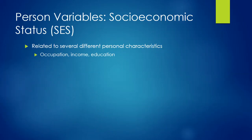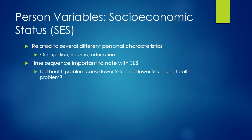SES is another variable of interest, related to occupation, income, and education — all of which are related to disease risk. It's important to consider the time sequence, since lower SES could cause a health problem or a health problem could cause lower SES. In descriptive epidemiology we're not as worried about causal relationships, but it's worth noting as you describe the prevalence of disease across people with different levels of SES.